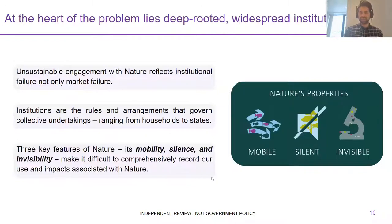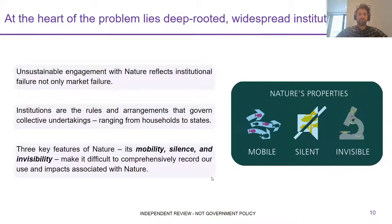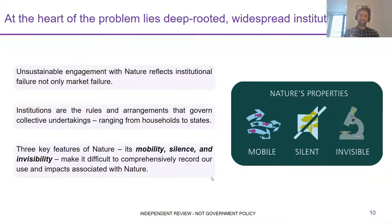Many are wondering: how did we get here? The review highlights that at its core, the problem of unsustainably engaging with the natural world lies in deep-rooted and widespread institutional failure — not just mere market failure. Institutions are the rules governing our collective undertaking: households, businesses, governments, multilateral forums. At their core, they have failed to account for nature and its economic benefits. Three key features of nature make this difficult: its mobility (birds migrating across the world), its silence (a tree doing vast amounts of work without being heard), and its invisibility (the benefits of soil happening beneath our feet).